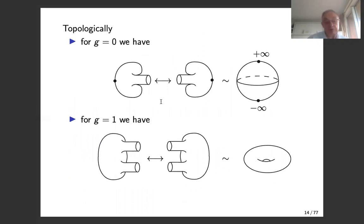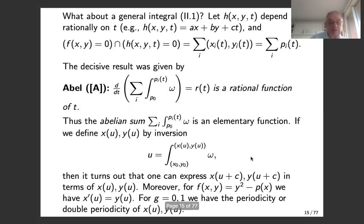The reason is topological. If you slit the plane and attach two copies of the plane — this is the case where you had two slits — open up the slits, make a tube, and stick them together, you get the Riemann sphere, and the two singularities of the integral are the points plus or minus infinity. Whereas for g = 1, you get the familiar way of constructing a torus — the genus one surface.